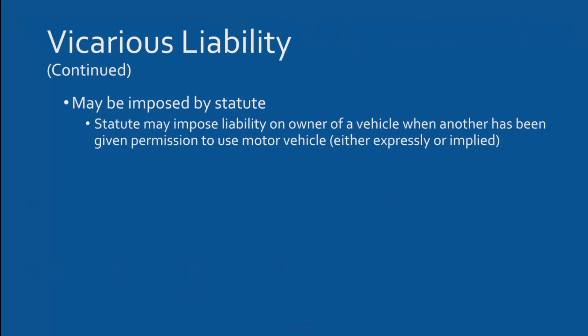Vicarious liability can also be imposed by statute — for example, liability may be imposed on the owner of a vehicle when another person has been given permission to use it. So if an employee is driving your truck as part of their job, that liability can be imposed on you as the owner even though someone else is driving.